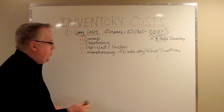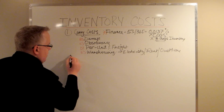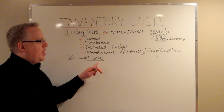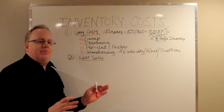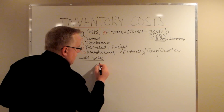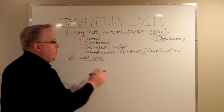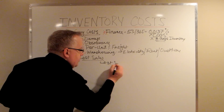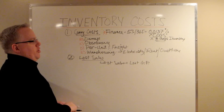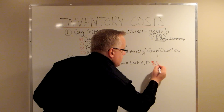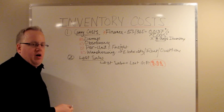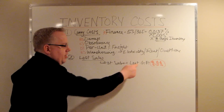Where most companies get confused is the second portion, and this pertains to lost sales — lost sales because your inventory counts were low. Most companies don't even think this is a cost of inventory, but it is. Anytime you lose sales because you don't have inventory, what do you lose? Lost sales equals lost gross profit. If you can apply a dollar value to that loss, then you have defined one portion of the lost sales cost of inventory.